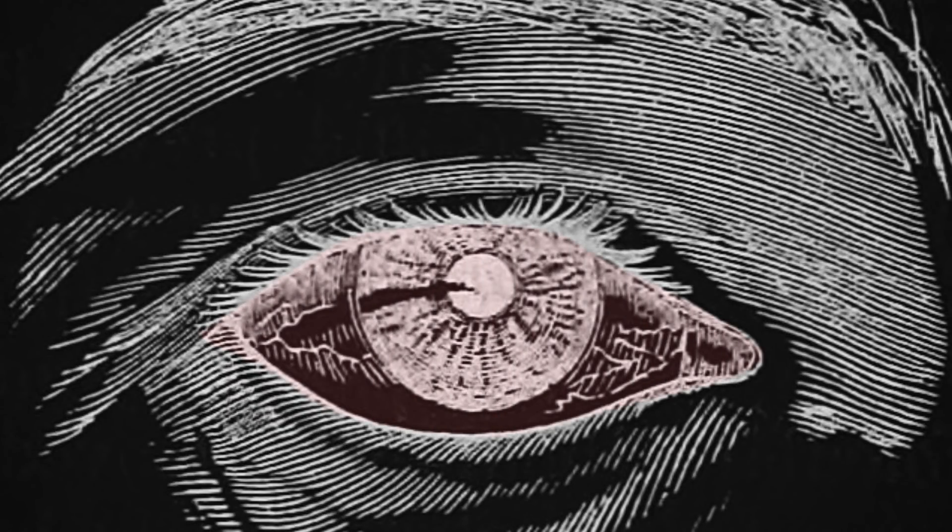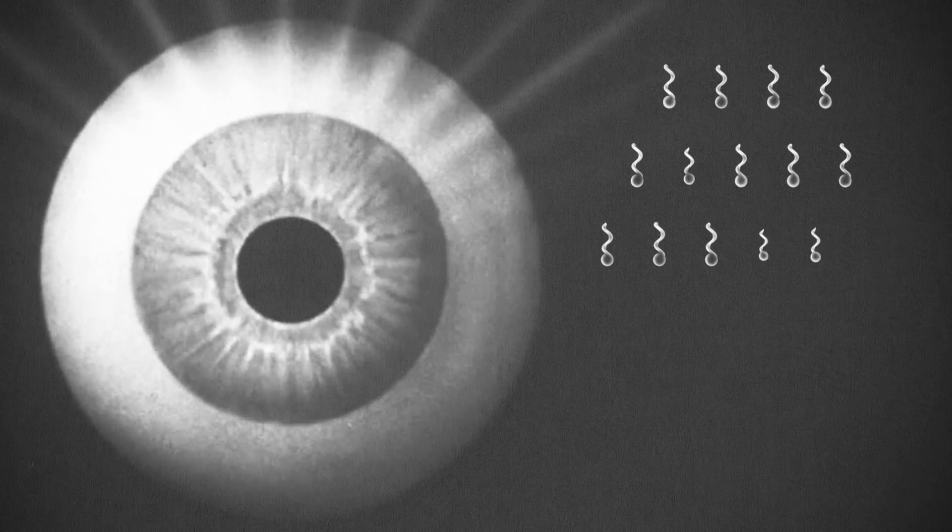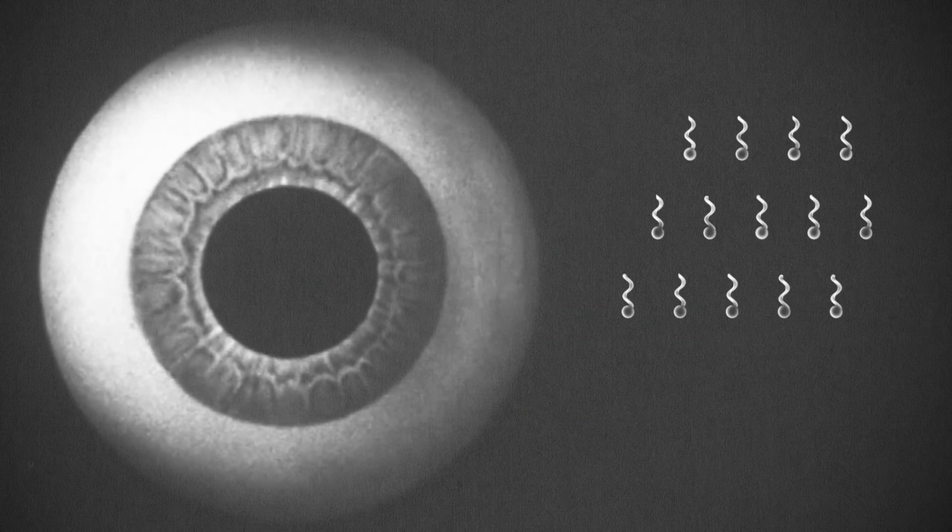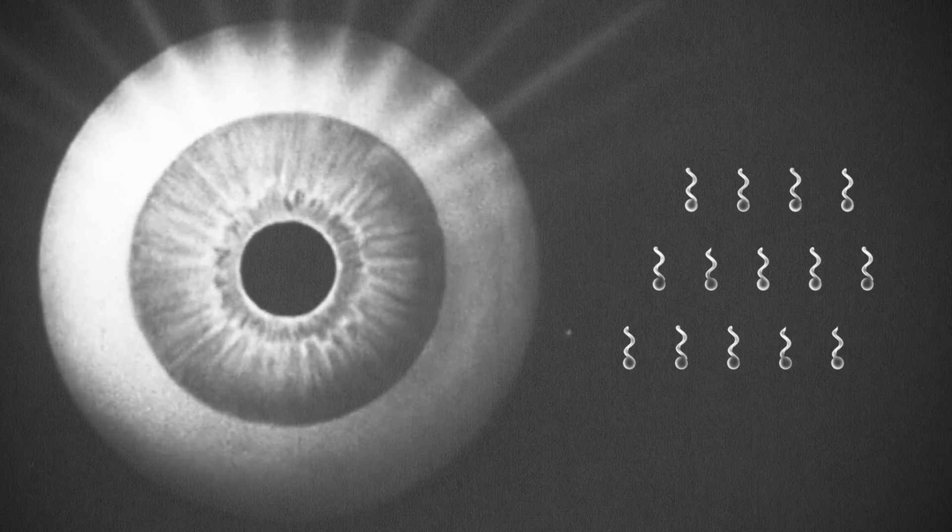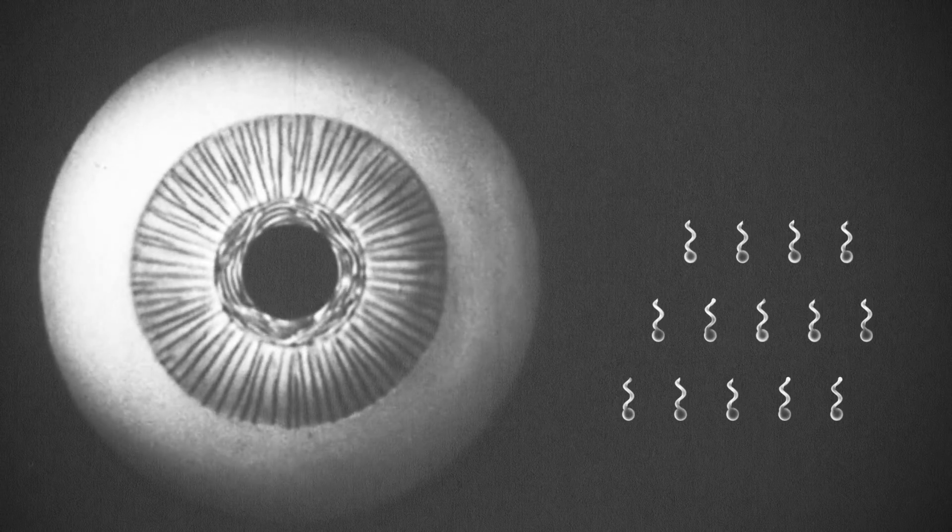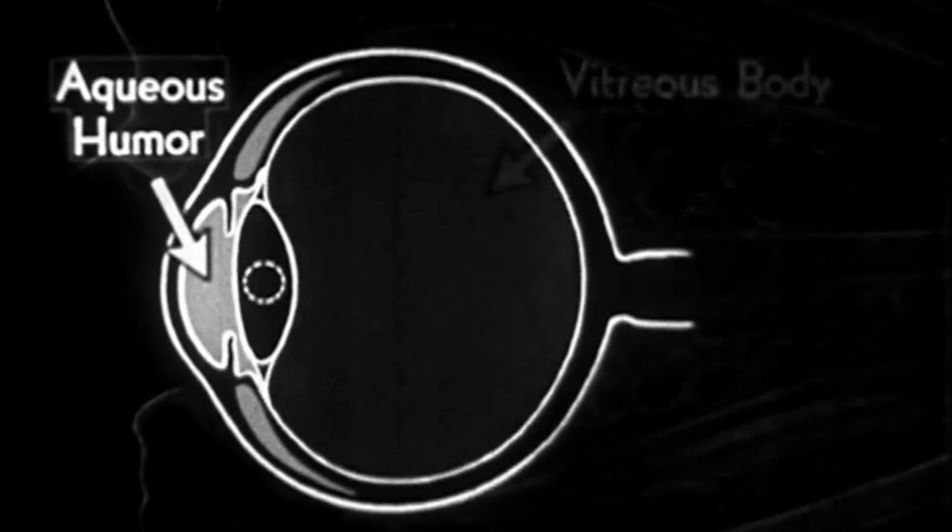Researchers wanted to build tiny delivery vehicles they could drive to deliver cargo quickly to specific parts of the eye, particularly through the dense jelly called the vitreous humor.